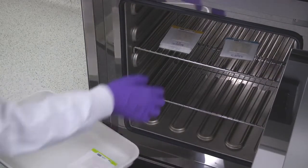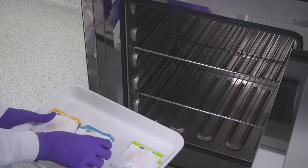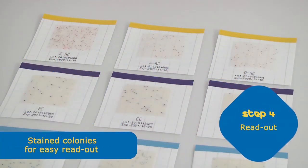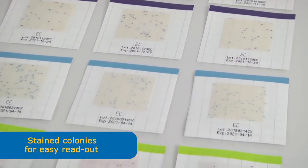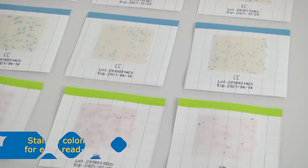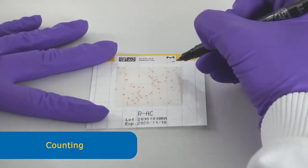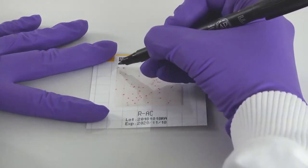After incubation, take the MC MediaPad out of the incubator to assess the readout. All MC MediaPad tests contain chromogenic substances or redox indicators for easier readout of specific microorganisms. For manual readout, use a pen to count all colonies in the specific color of the pad.